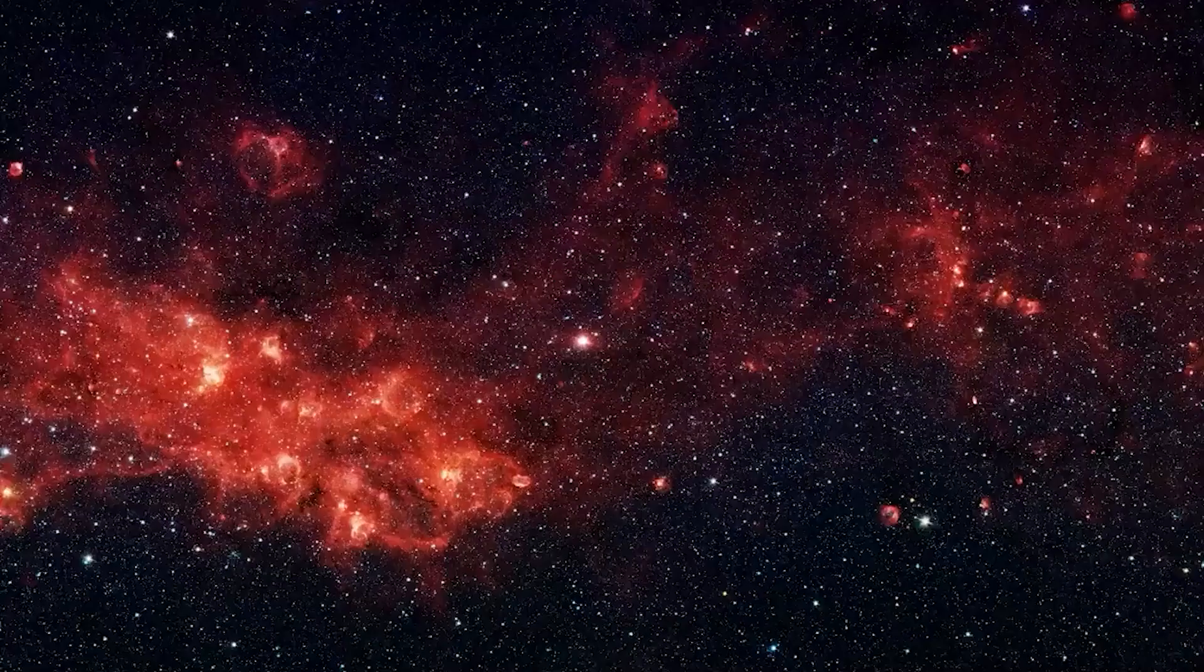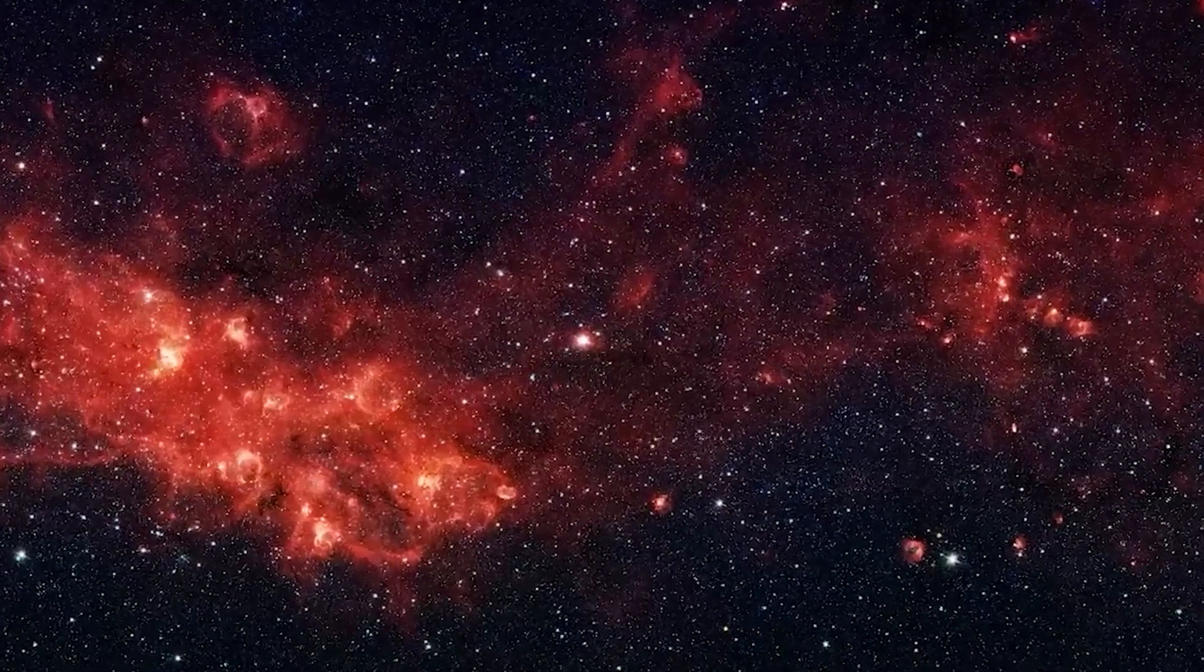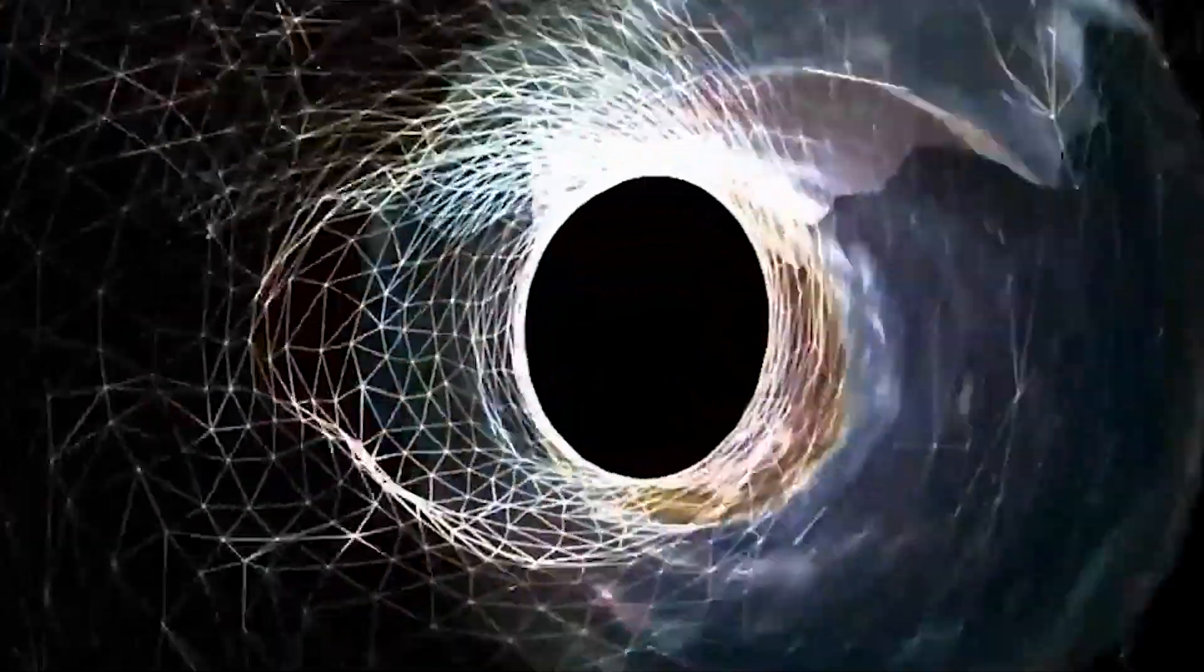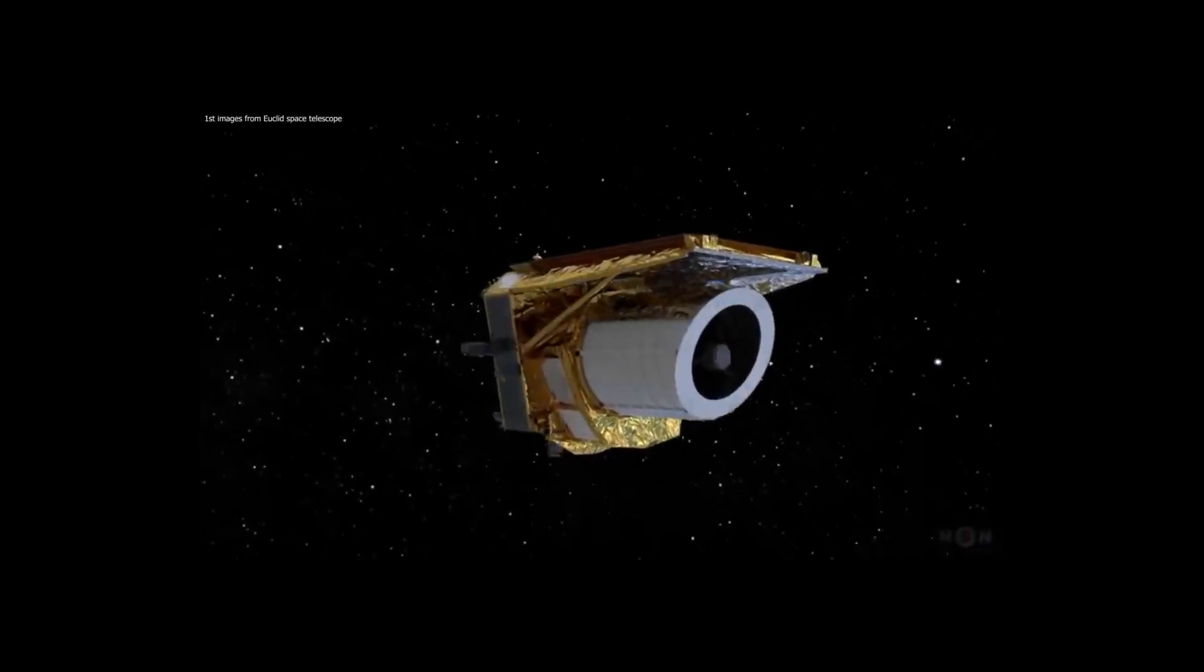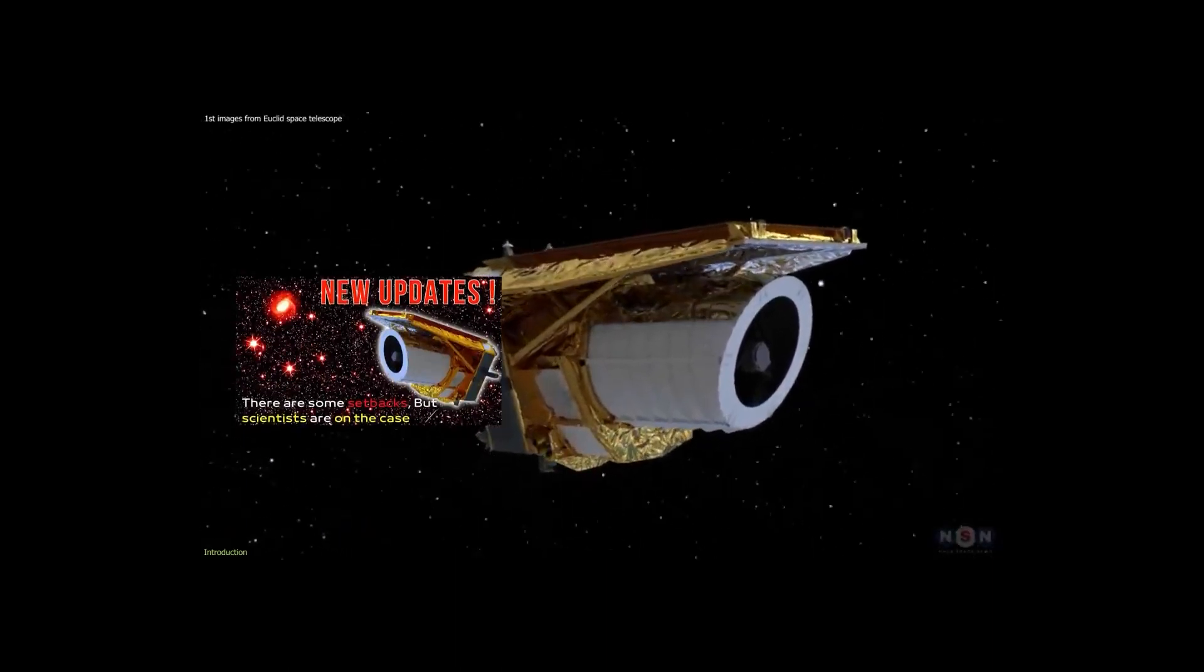The first image that Euclid sent us was of the Horsehead Nebula, a star cluster inside our galaxy, the Milky Way, a dwarf galaxy that the telescope looked at for under an hour, and a galaxy that is usually partially blocked by the dust in the Milky Way.